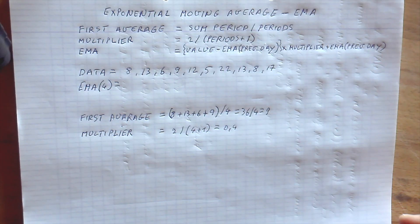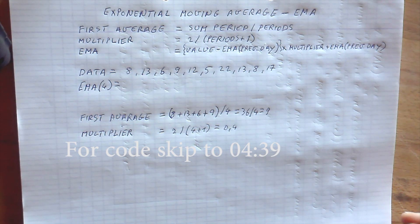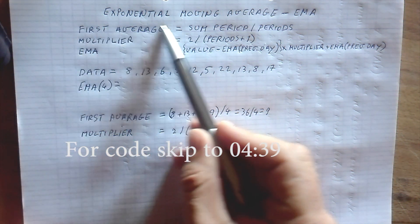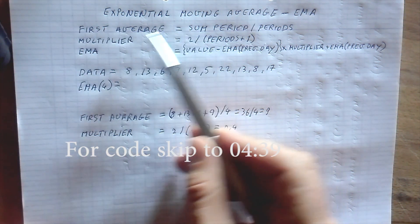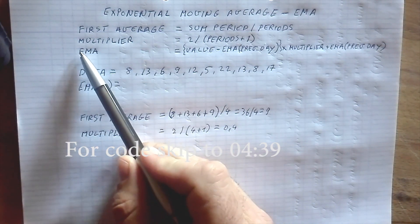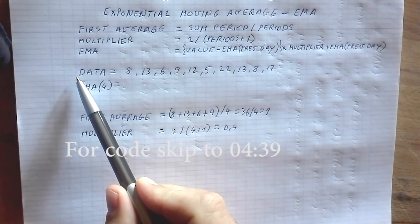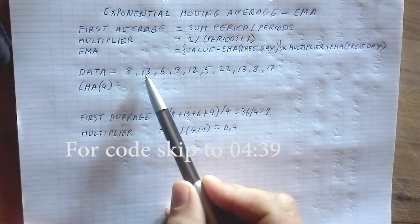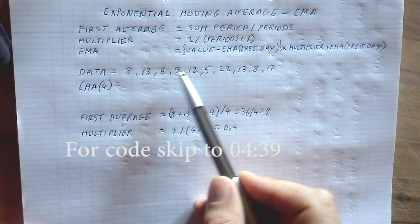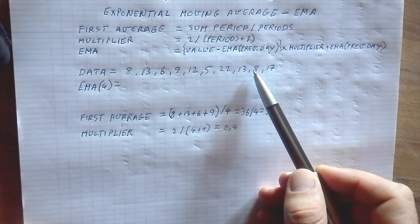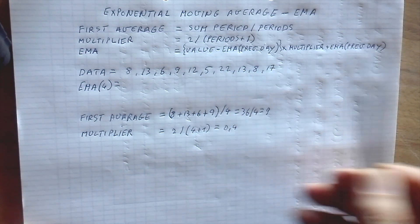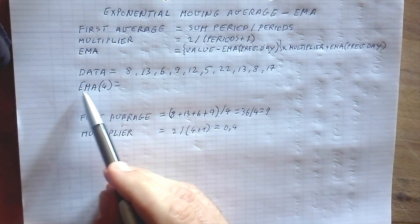First, an explanation of what the exponential moving average is. To calculate the EMA it's very easy. We need three things: the average, then a multiplier, and then the EMA itself. Here is our dataset: the numbers 8, 13, 6, 9, 12, 5, 22, 13, 8, 17.